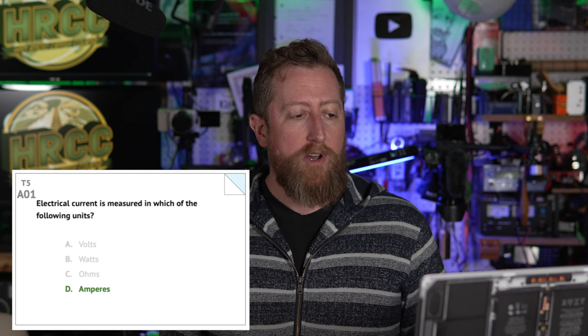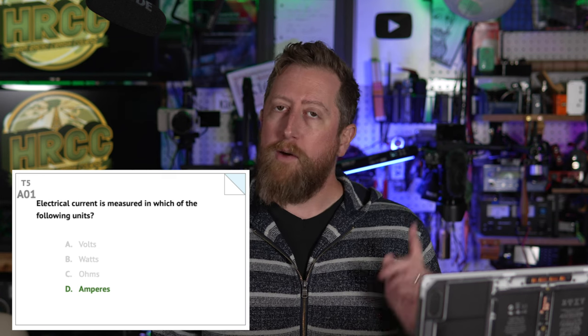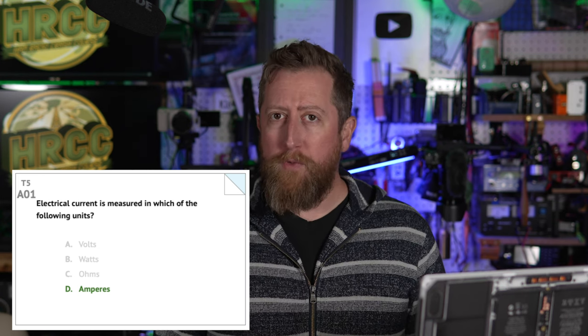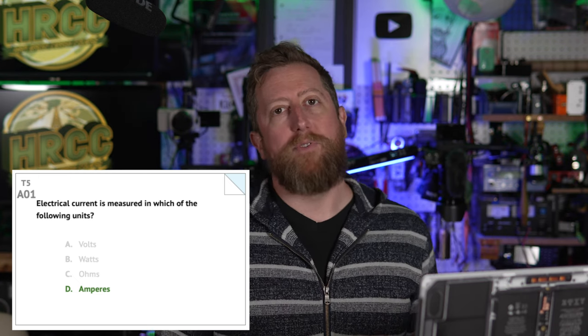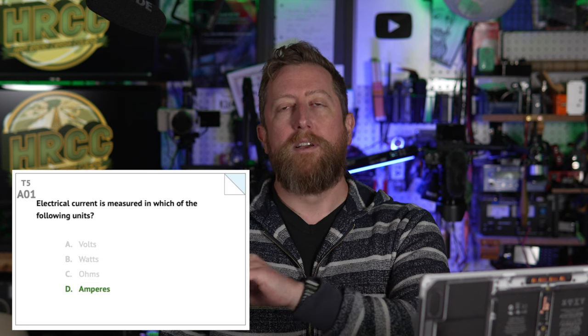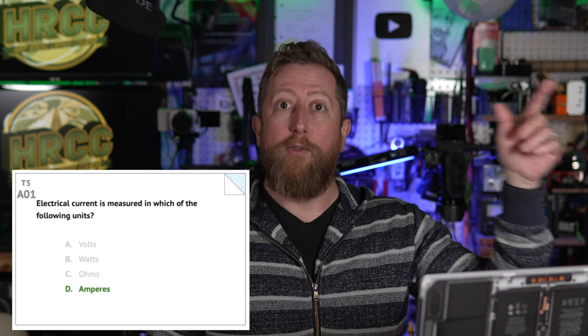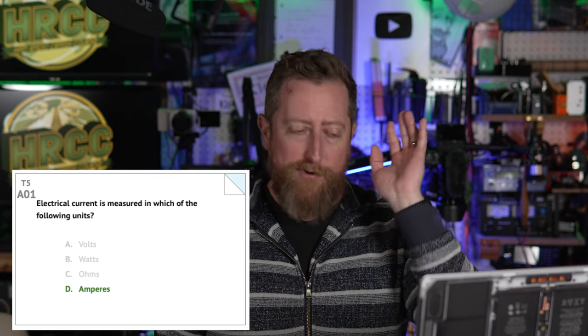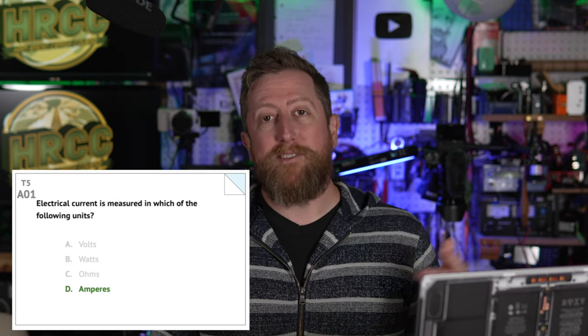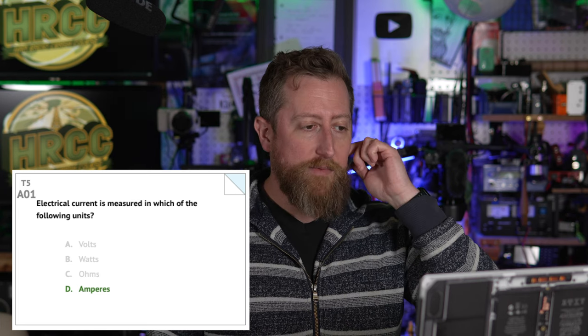This is sub-element 5 broken up into four sections. Question Alpha 1: electrical current is measured in which of the following units? We go over the right answers only so you spend time focusing on those instead of researching the wrong answers, which could get you thrown off track. The answer for this one is D, amperes. That is the measurement we use for electrical current.